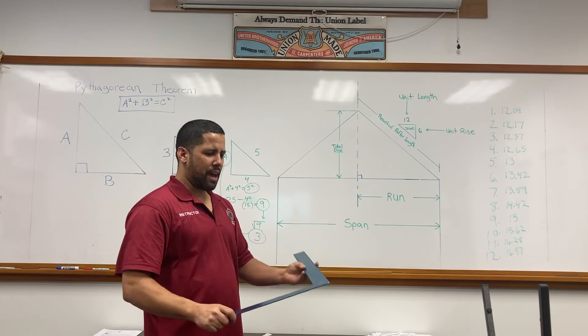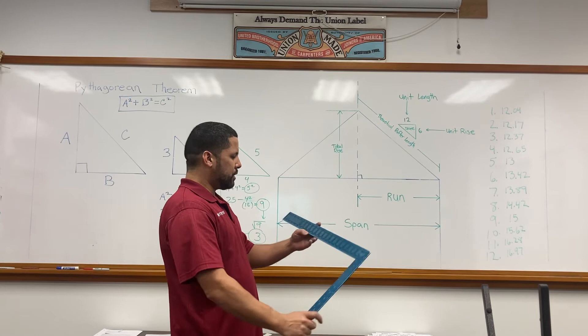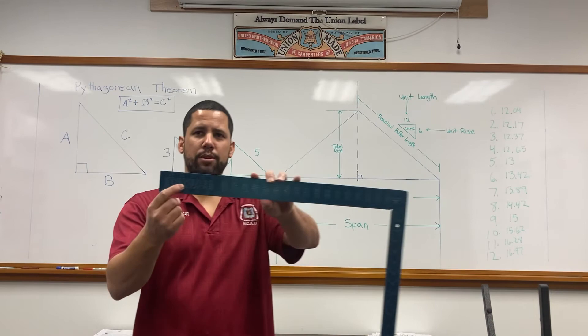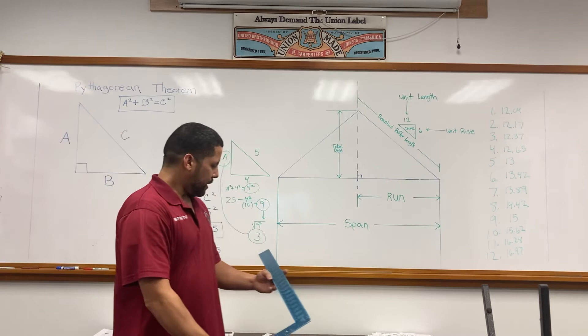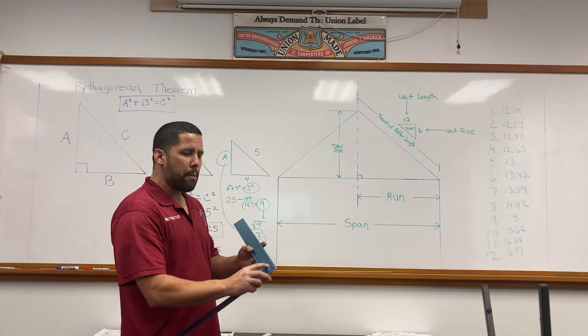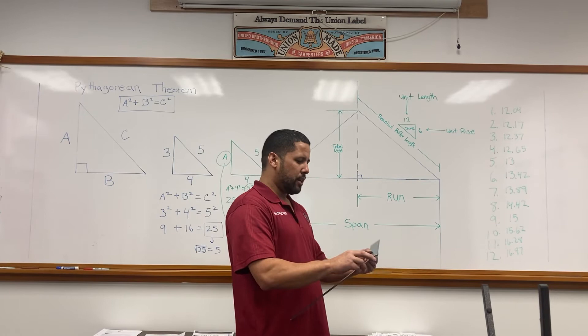We will be using the body of the framing square. With the tongue to your right and body to your left, the top numbers or top table is the rafter table on your framing square. I want you to take a look right under the number 2 on your framing square. What do you have?